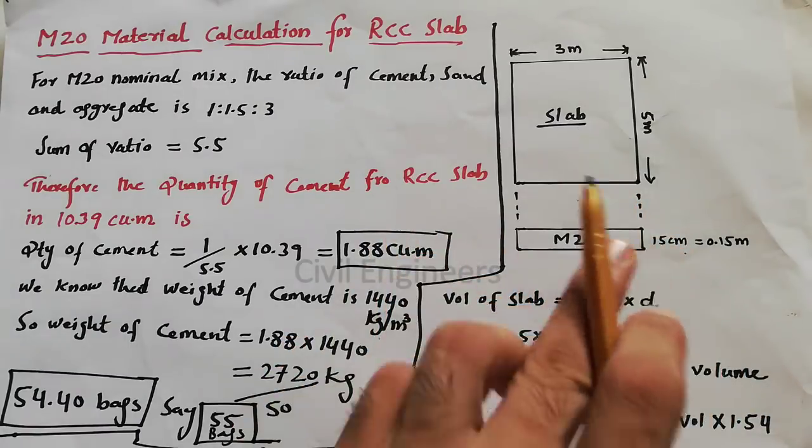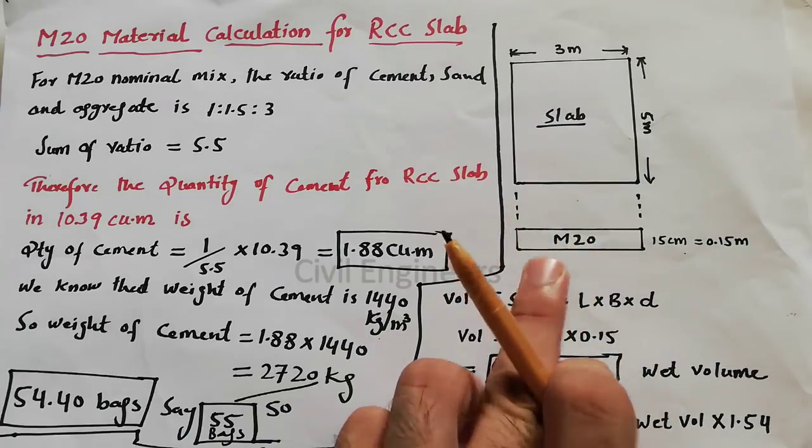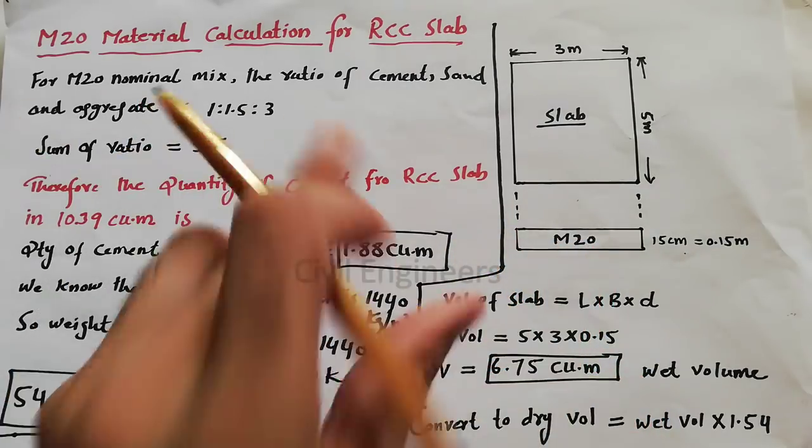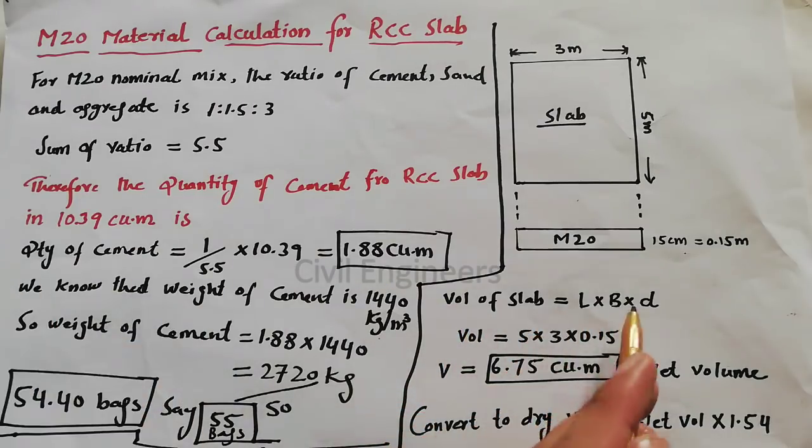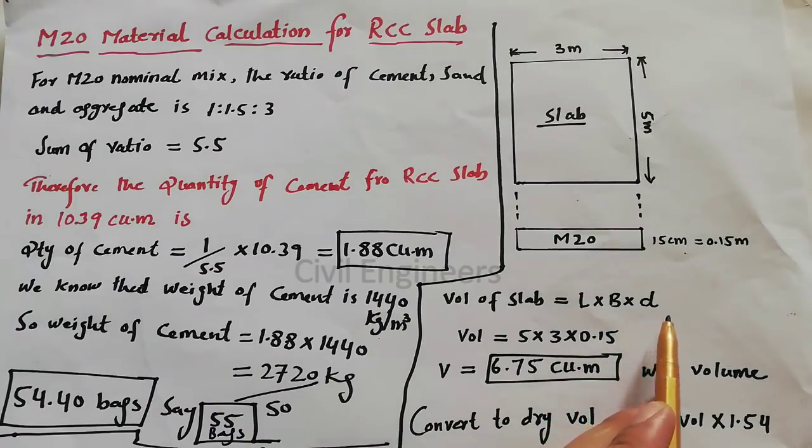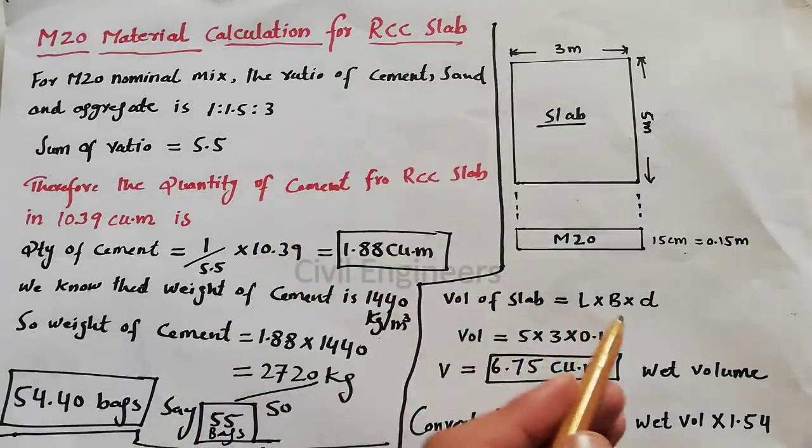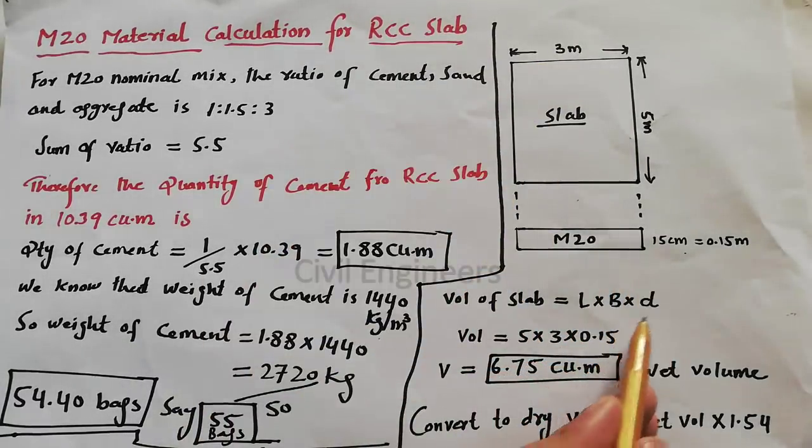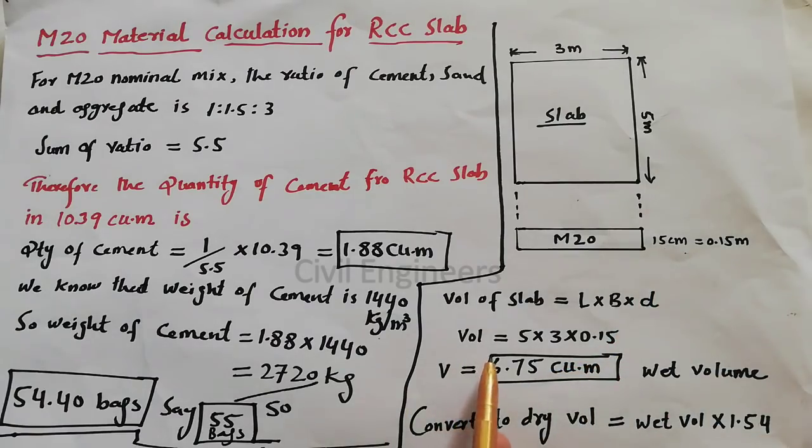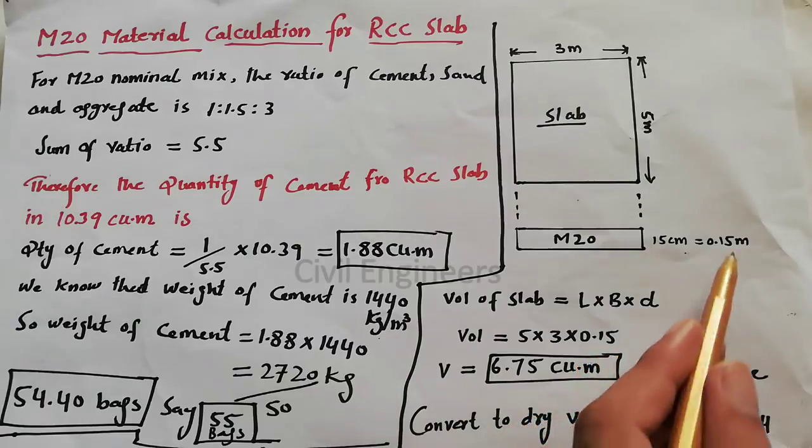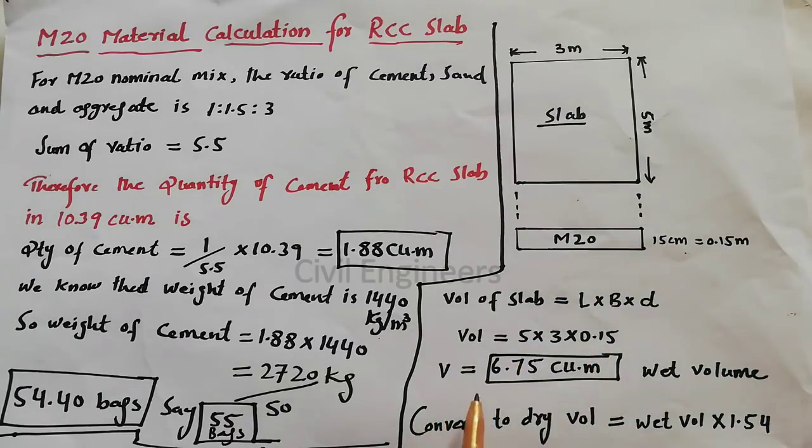First of all, I have to find the volume of this RCC slab, then we can find material calculation. Volume of slab is equal to L multiply by B multiply by D, where L is length of the slab, B is breadth of the slab, D is depth or thickness of the slab which is 0.15 meter. So volume equals slab length 5 meter, breadth 3 meter, multiply 0.15 meter thickness. When we multiply these three, 5 × 3 × 0.15, it comes to 6.75 cubic meter.